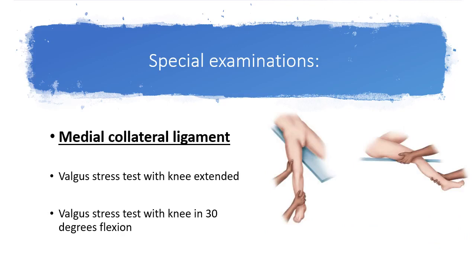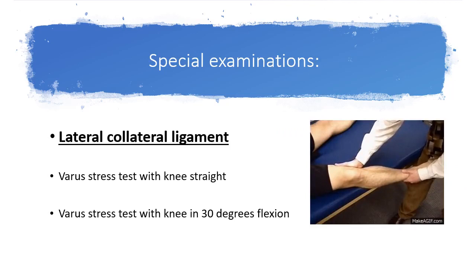For the medial collateral ligament, you want to see if the knee opens on the medial side. Specifically for the MCL, the knee must be kept at 30 degrees of flexion. Place your hand on the outside of the knee and apply a valgus force to see if the medial side opens; you can place the upper leg on the bed for extra stabilization. For the lateral collateral ligament, place your hand on the inside and try to open the lateral part of the knee — also performed at 30 degrees of flexion.